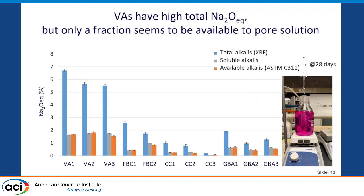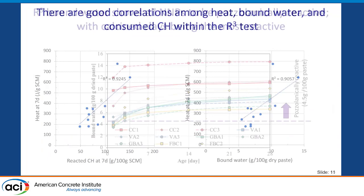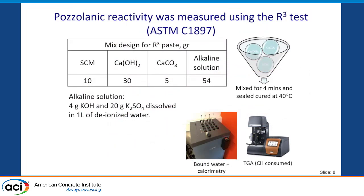We also looked at the reaction products that form in the R3 test. Since the R3 system consists of SCM and calcium hydroxide, the expected products include C-S-H and calcium alumino-silicate hydrate. In the case of calcined clays, reactive alumina together with calcite produces carboaluminate phases, as well as ettringite and potentially monosulfate.